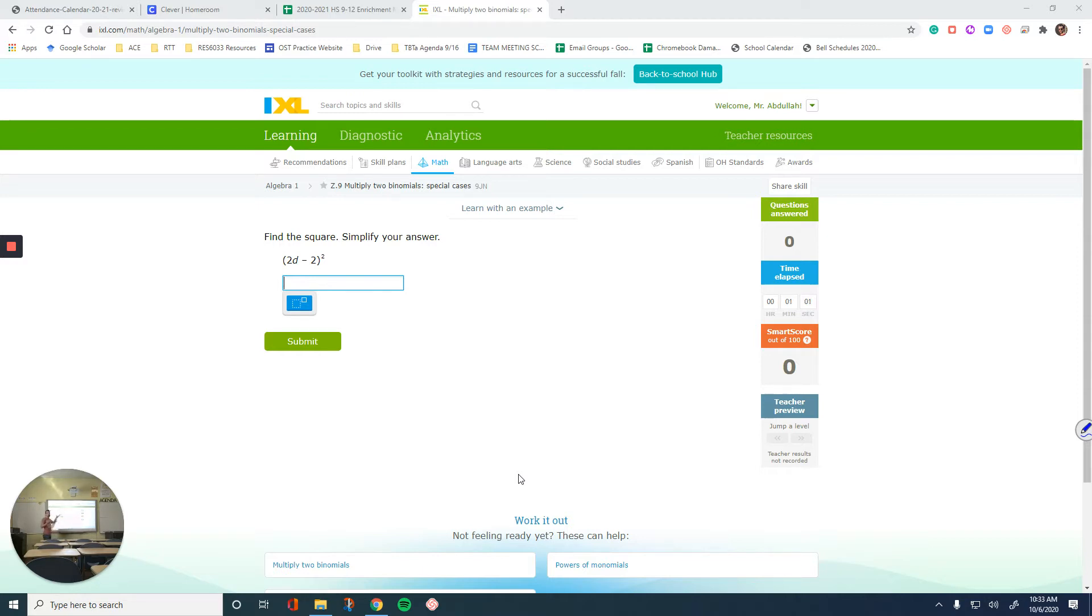The only difference is we have special cases. So 2d minus 2 in parentheses squared - it says find a square. If you know how to expand this, you would be able to tell what the final answer is going to be without doing everything I'm about to do, but that takes a long time. You need a lot of practice with these cases so that when you look at what it is, you'll know what the answer is going to be.